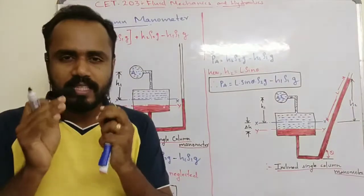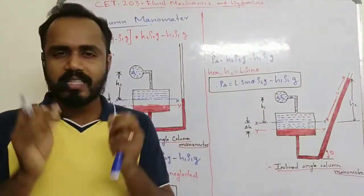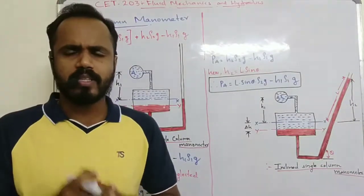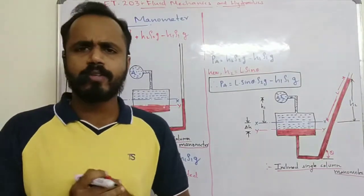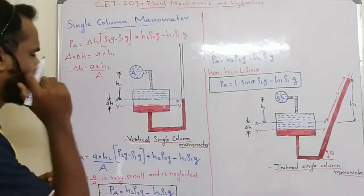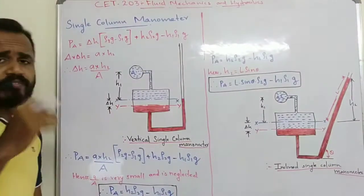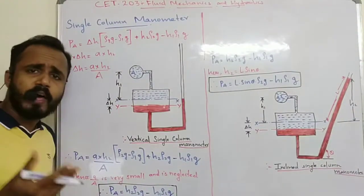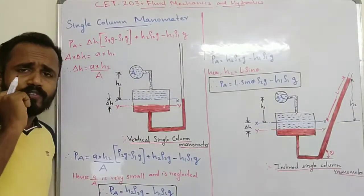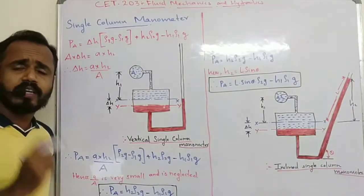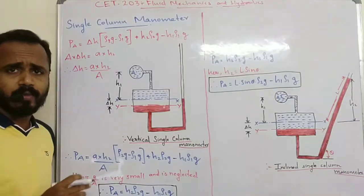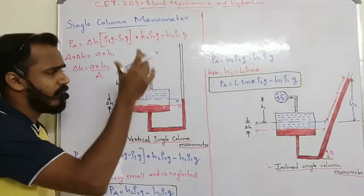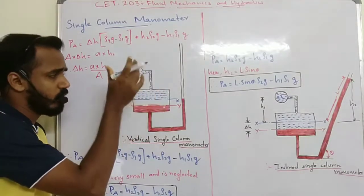Hi students! We are going to discuss the single column manometer. This is a modified form of the U-tube manometer. We connect the left limb to the reservoir.